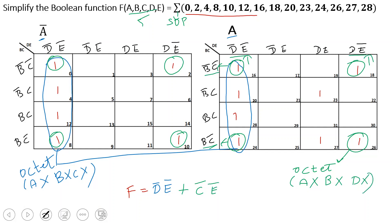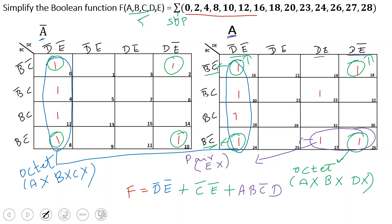Next, from the octet form we have identified three variables to eliminate. For the quad group, two variables are eliminated. For the pair group, one variable is eliminated. Looking at the pair: the column gives B, C-bar, and the column gives D, E-bar — so E is eliminated and the common variable is D. The final pair expression term is A, B, C-bar, D.